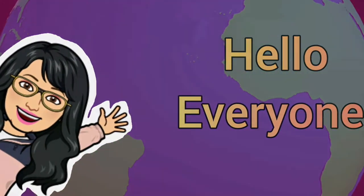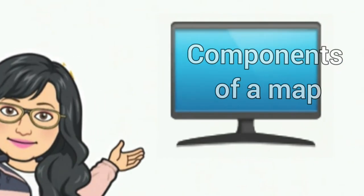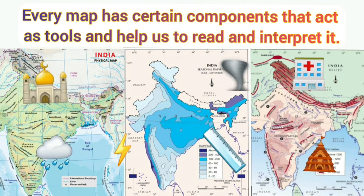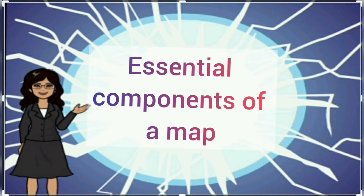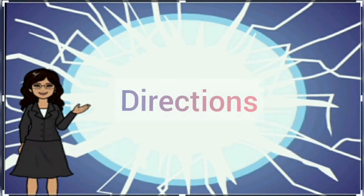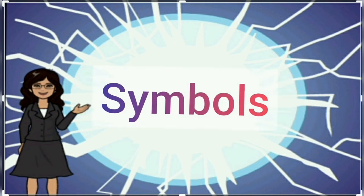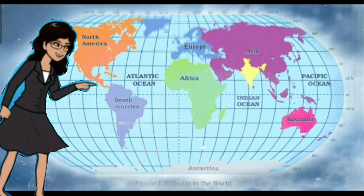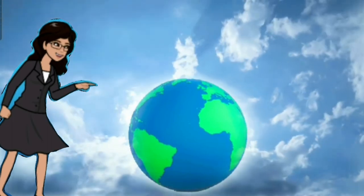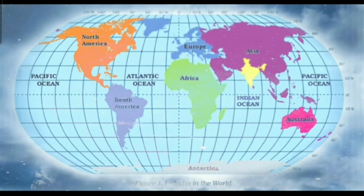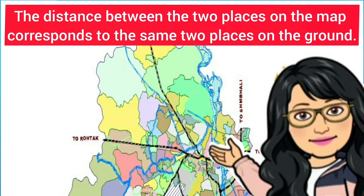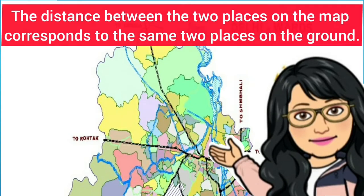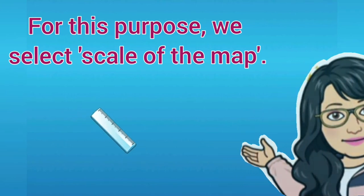In this video you will study about important components of a map. Every map has certain components that act as tools and help us to read and interpret it. These are called essential components of a map: distance, directions, and symbols. Maps are drawings which reduce the entire world or a part of it to fit on a sheet of paper. This reduction is done very carefully so that the distance between two places on the map corresponds to the same two places on the ground.